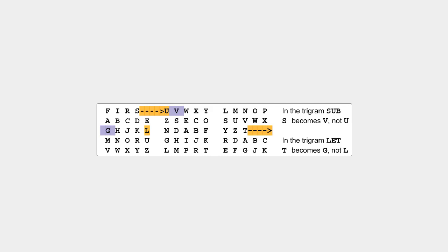Without Rule 1, in the trigram LET, the T would be replaced by L. Instead, it is replaced by the letter to the right of L in the left square. This wraps from column 5 to column 1, which has the letter G.